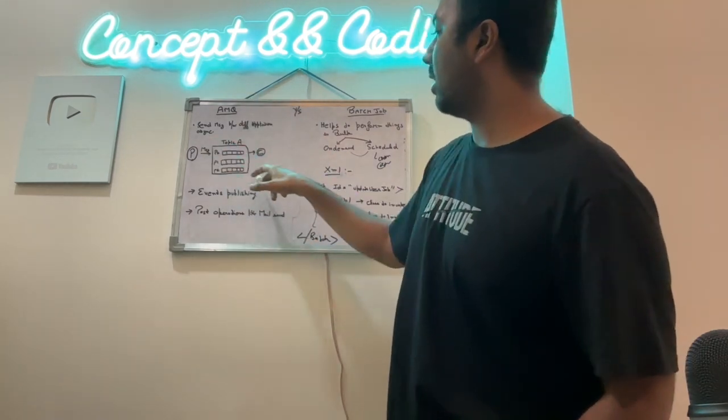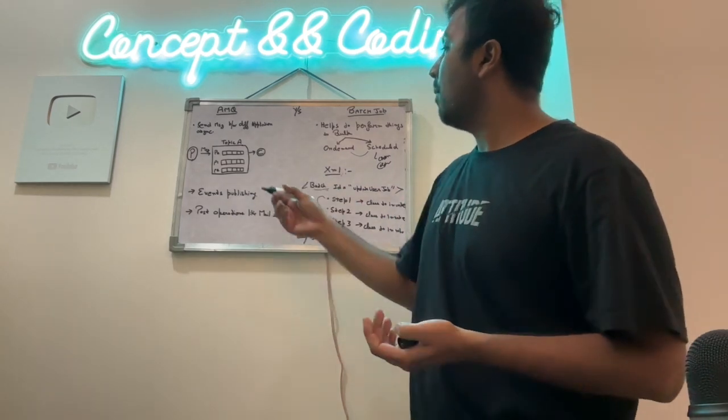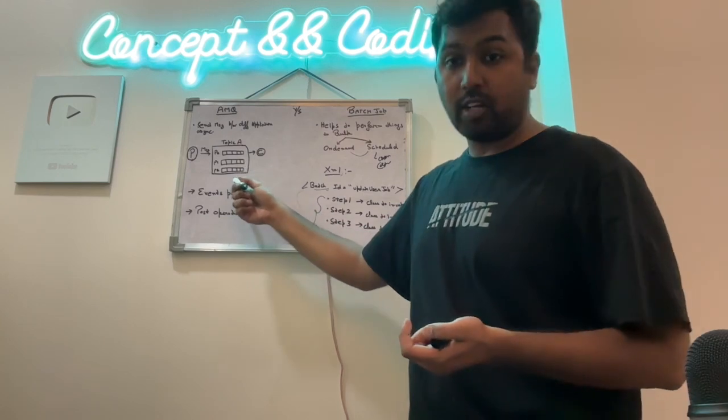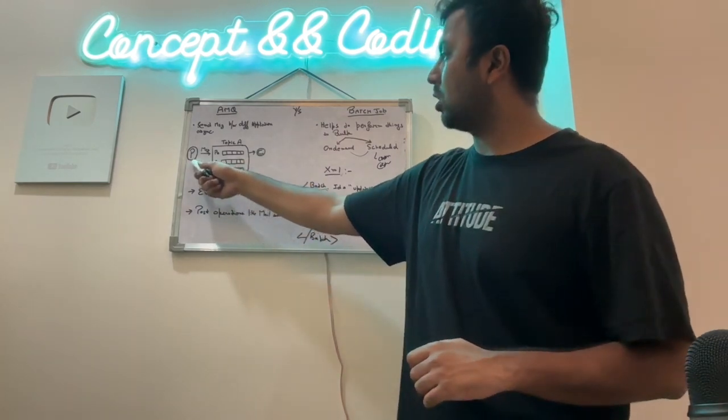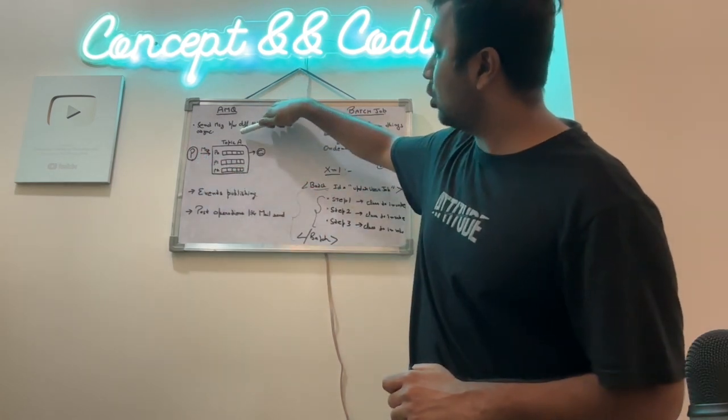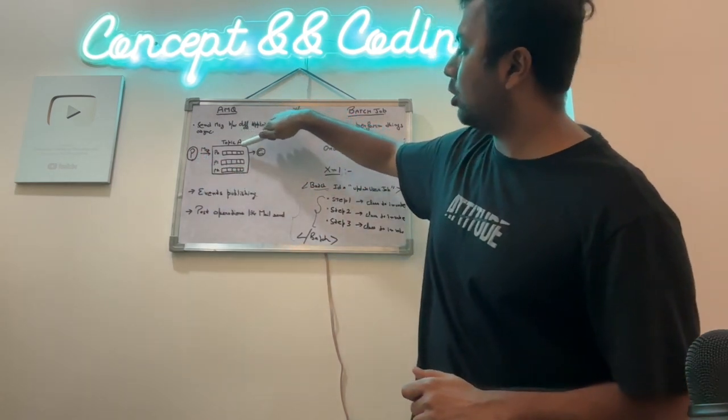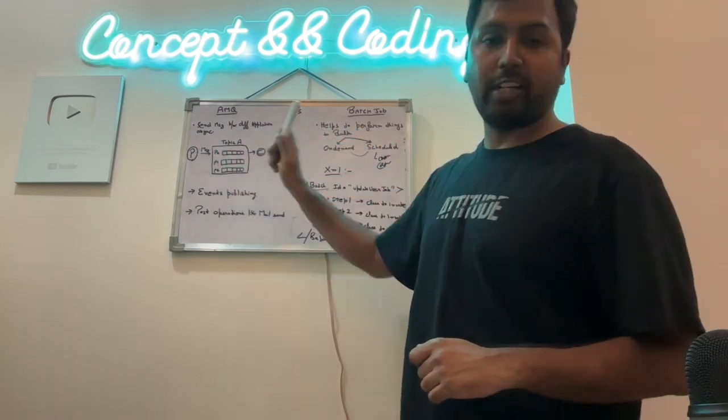So here, Kafka is a very popular messaging queue, and I have already covered in depth. We have a producer producing a message, so there is a topic A, let's say, inside the topic, there are multiple partitions, so this message goes into one of the partitions. Once the message goes to a particular partition, there is a consumer which has subscribed to a particular partition.